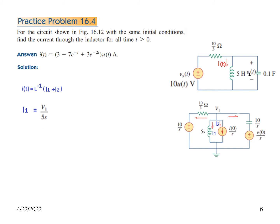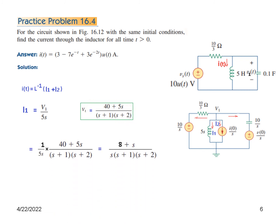I1 is V1 over 5S. Dividing V1 by 5S gives I1. We use the same V1 value found previously. So I1 equals 1 over 5 multiplied by V1 in the S-domain, and we proceed to apply the partial fraction method.